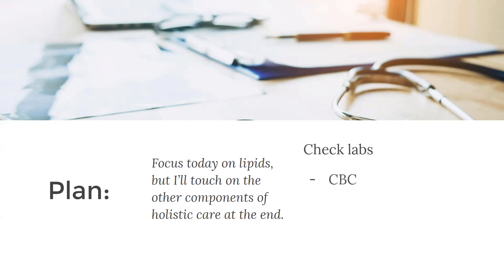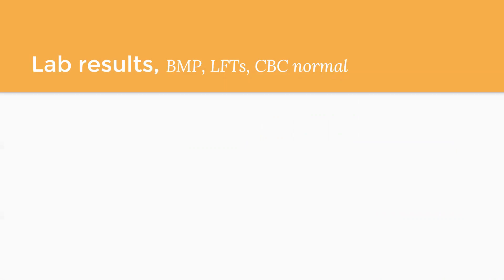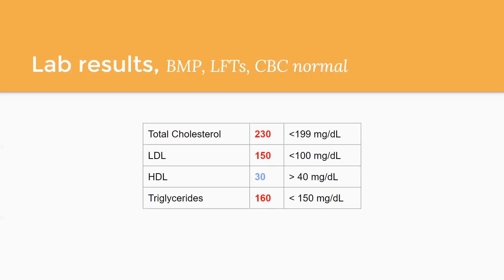I checked some labs for him: a CBC, a CMP, a lipid panel, and urine microalbumin. Overall, aside from some hyperglycemia, his BMP was normal. His LFTs and CBC were also normal. The urine microalbumin was not normal, but that's the subject of last week's case study. This is his cholesterol panel in US standard units. Total cholesterol is 230. Everything is abnormal: LDL is 150 (high), HDL is 30 (low), and triglycerides are 160 (high). Luckily these aren't that high compared to how high his blood sugar was — and typically those tend to go together.